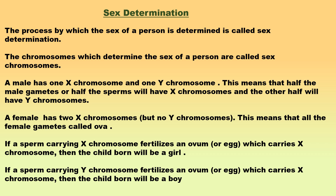A female — woman or mother — has two X chromosomes but no Y chromosomes. This means that all the female gametes called ova or eggs will have only X chromosomes. The sex of a child depends on what happens at fertilization. If a sperm carrying an X chromosome fertilizes an ovum carrying an X chromosome, then the child born will be a girl or female, because the child will have the XX combination of sex chromosomes. If a sperm carrying a Y chromosome fertilizes an ovum carrying an X chromosome, then the child born will be a boy or male, because the child will have the XY combination of sex chromosomes.